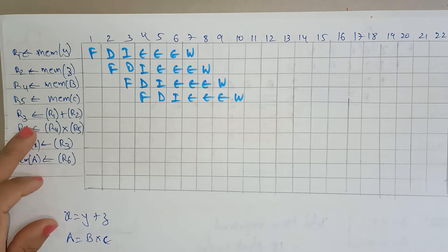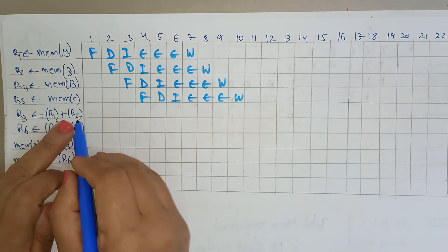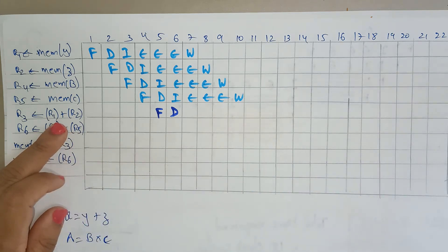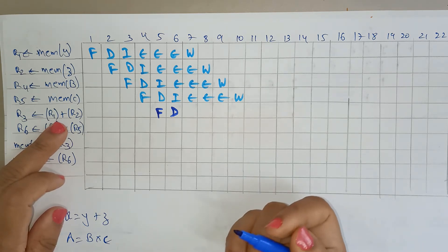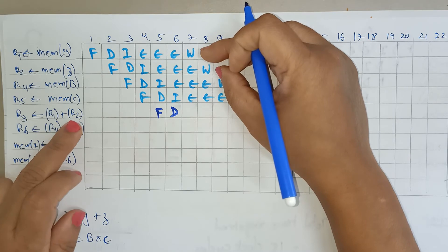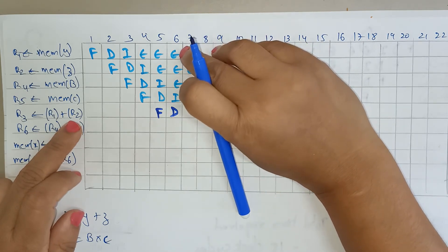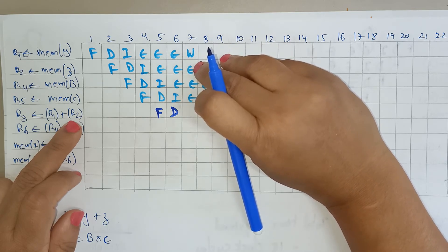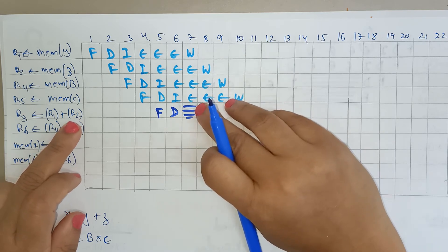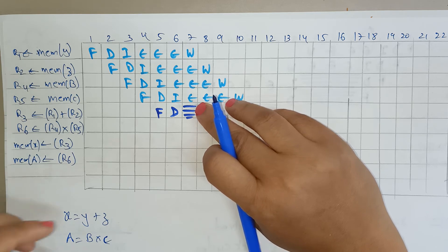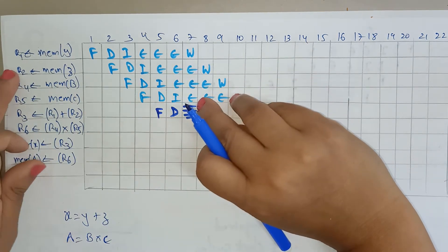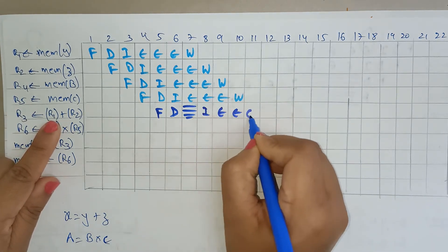Now coming to the R3 instruction: the content of R1 should be added to the content of R2. Fetching and decoding have no problem. But at the issue stage, you need the operands from the registers, meaning R1 and R2 execution must be complete first. R1 execution finishes at the sixth cycle and R2 execution finishes at the seventh cycle. So you must wait until R2 execution is over, then start issuing, execution, and write back.